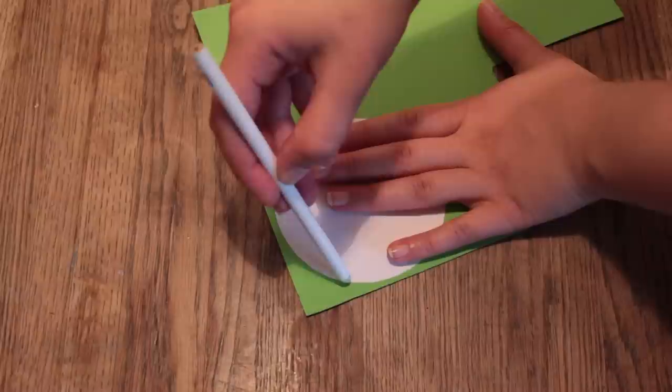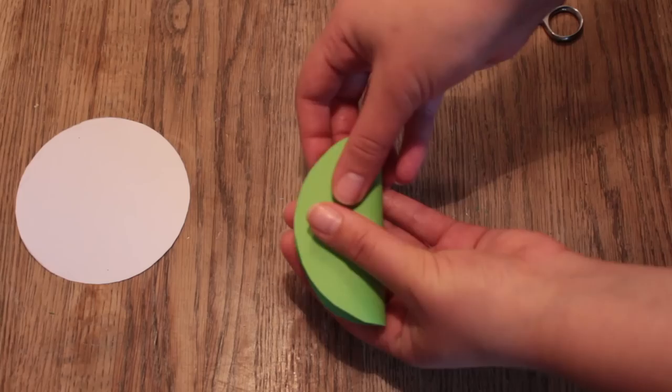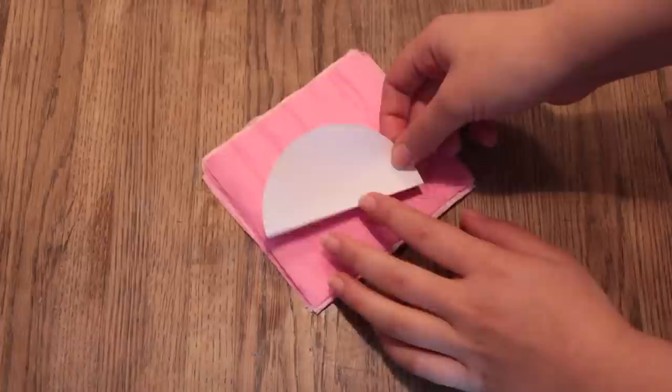Cut your circle out and then place it on some construction paper and then sketch around it. And then cut that circle out once again. Fold this circle in half and then cut along the fold. And this is for the ends of the honeycomb.